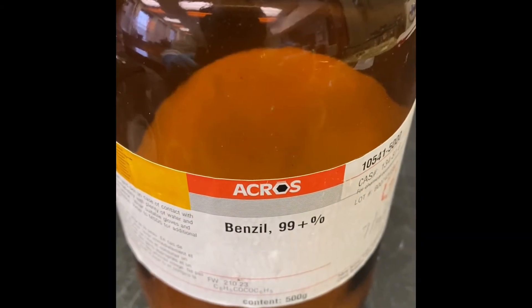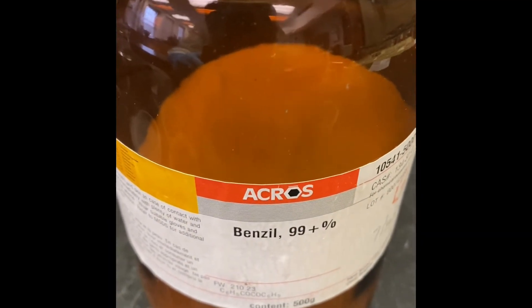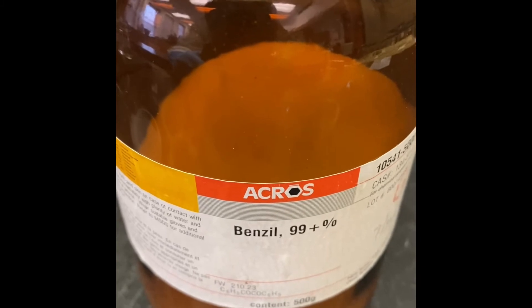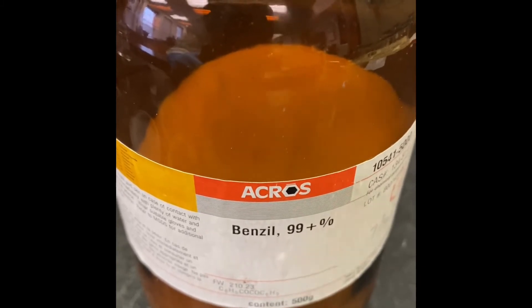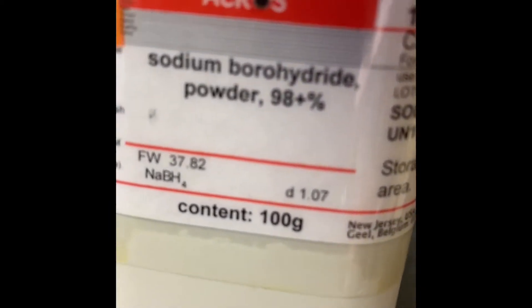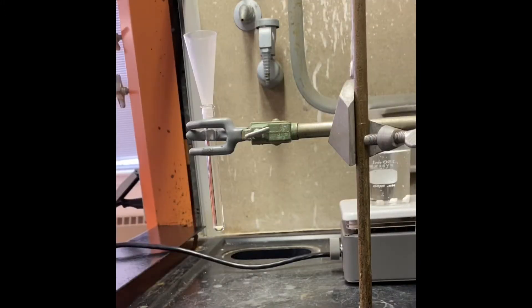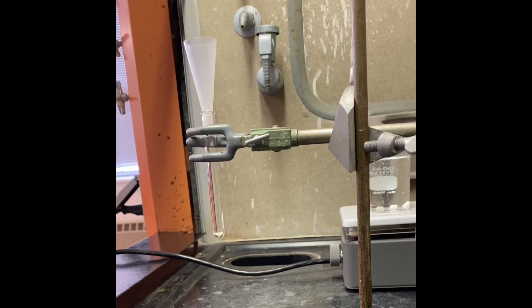In today's experiment we're going to use benzyl and we're going to do reduction with sodium borohydride. 50 milligrams of benzyl as the reduction reagent, we're going to use sodium borohydride. Right now I have 50 milligrams of benzyl in my reaction test tube and I'm going to add 0.5 milliliters of ethanol.